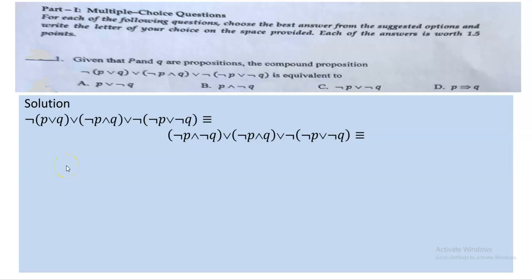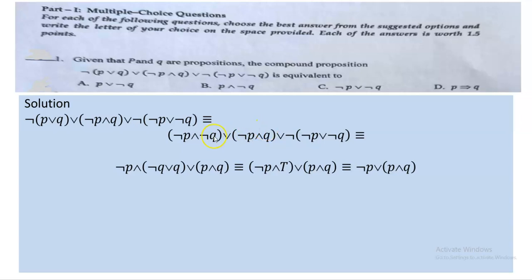The first step is to apply De Morgan's law. As shown here, the negation of (P or Q) is changed to negation P and negation Q. The rest are taken as they are. Now notice we have negation P appearing again, so I can combine them. I took negation P as a common factor out and then used the conjunction directly.